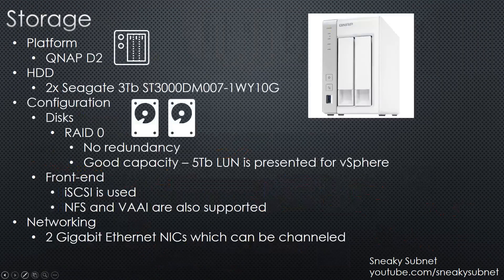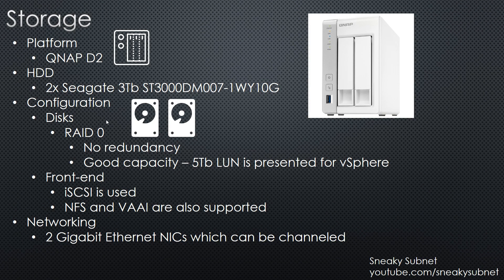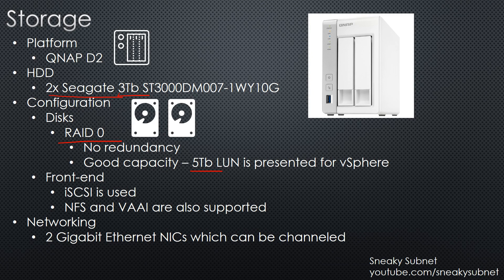For storage, I use a QNAP D2 appliance as a NAS storage device. It has room for two HDDs or SSDs in 2.5 or 3.5 inch form factor, and additional drives can be attached over USB. I have two Seagate HDD drives, each with 3 terabytes. I put both drives into RAID 0 — I know there's no redundancy, but capacity is more important to me in my lab environment. It presents a 5 terabyte LUN to vSphere with some free space for the future. In terms of front-end storage protocols, the appliance supports iSCSI, which I use currently, and NFS with VAAI are also supported.